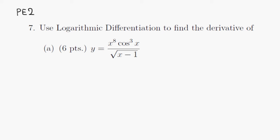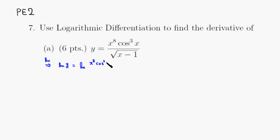The first step is to take the natural log of both sides — no derivative yet. So you have the natural log of the left-hand side, which is just the natural log of y. Then you have the natural log of the complicated expression: x to the 8th, cosine raised to the third of x, and a square root of x minus 1.